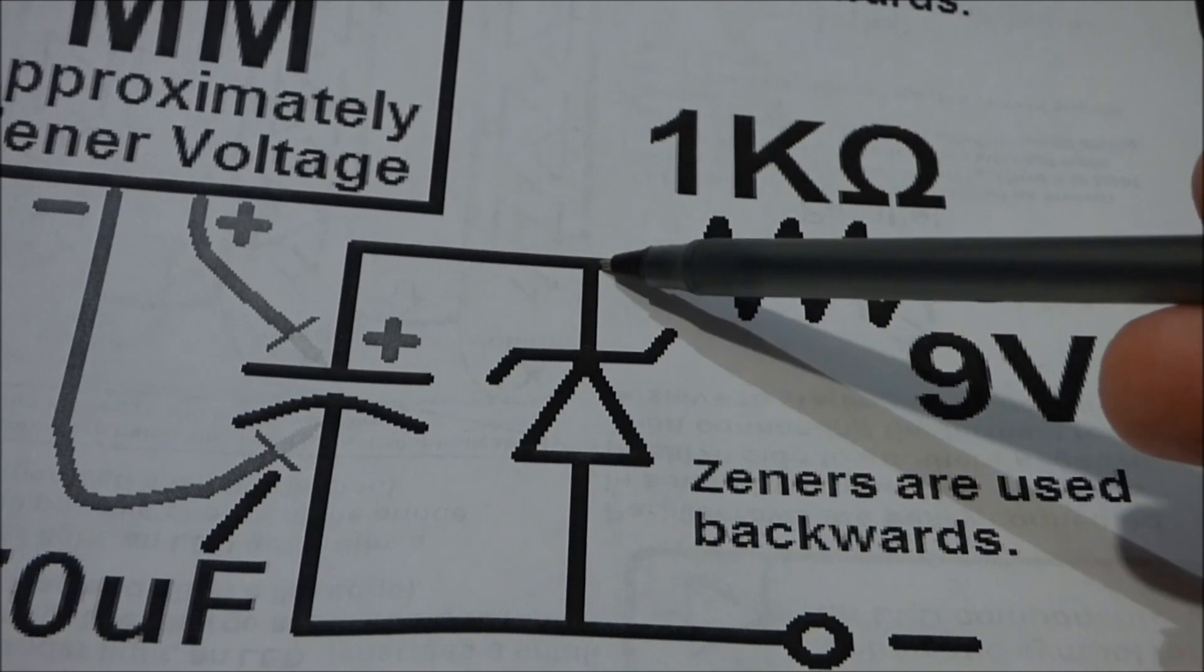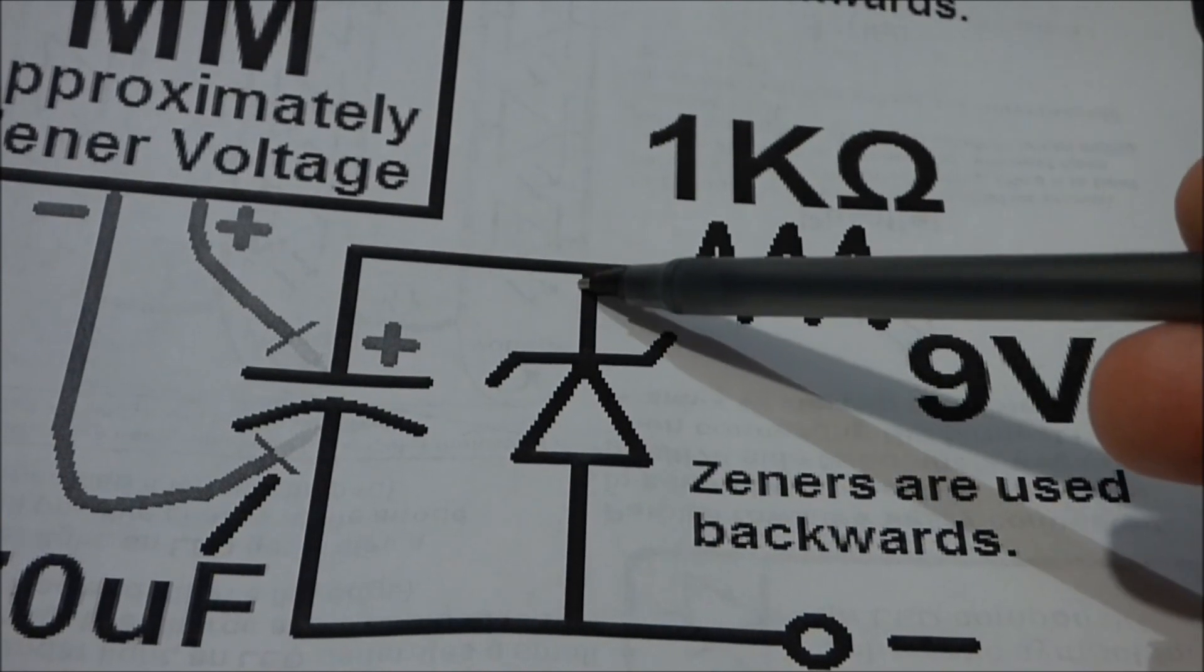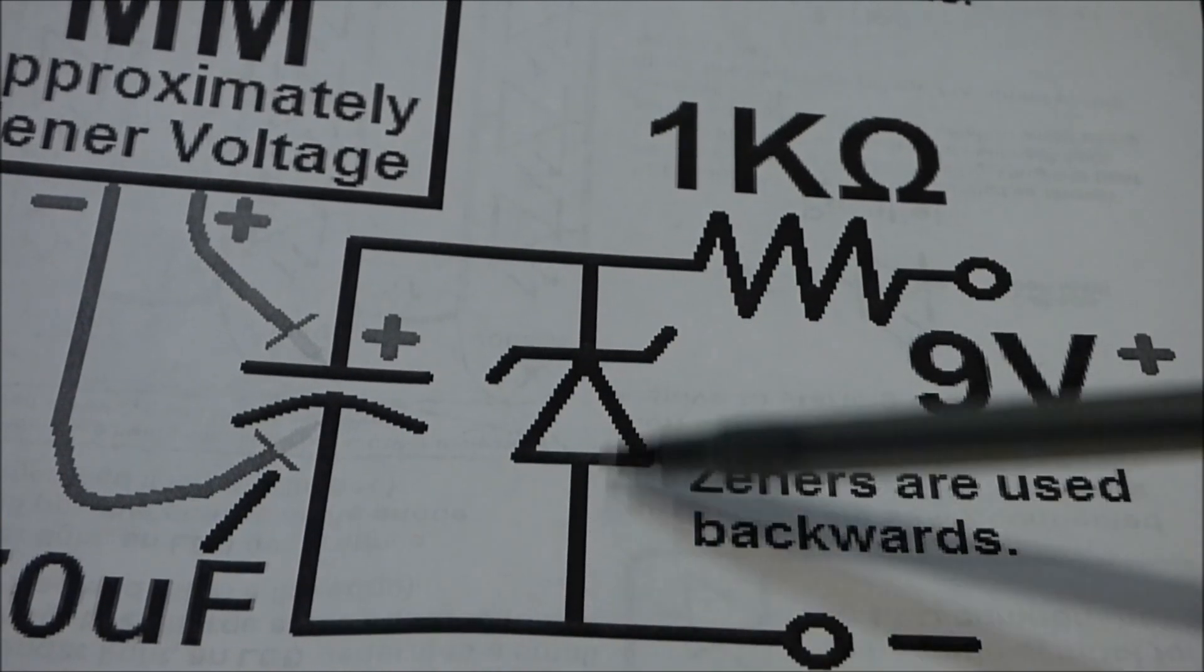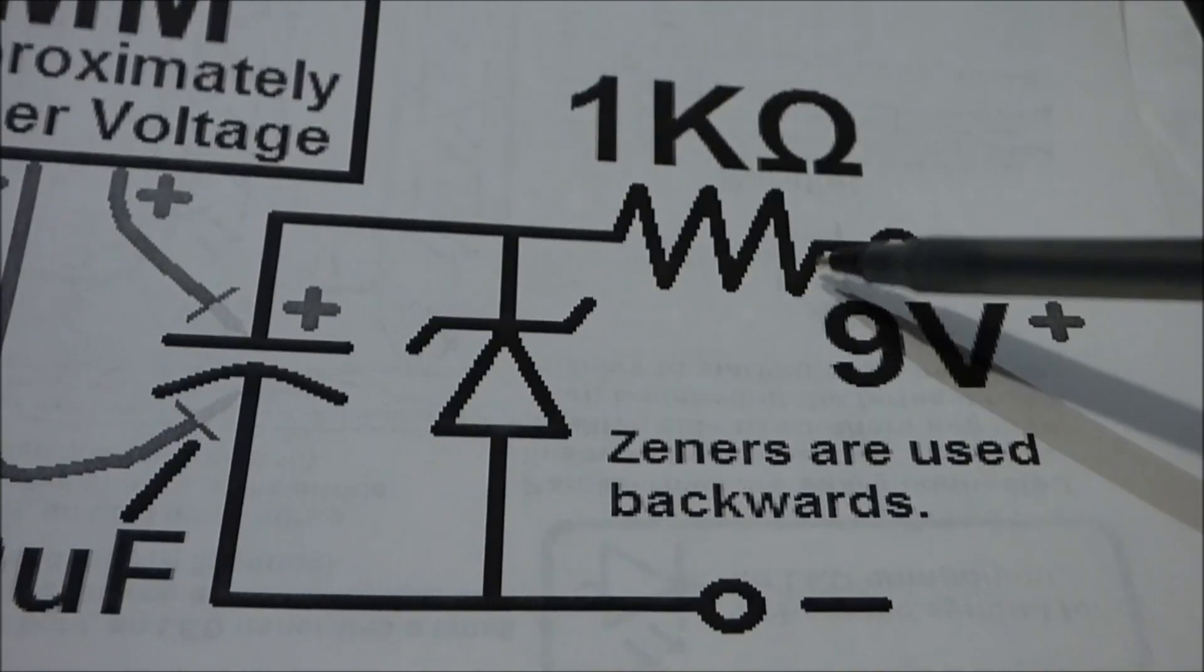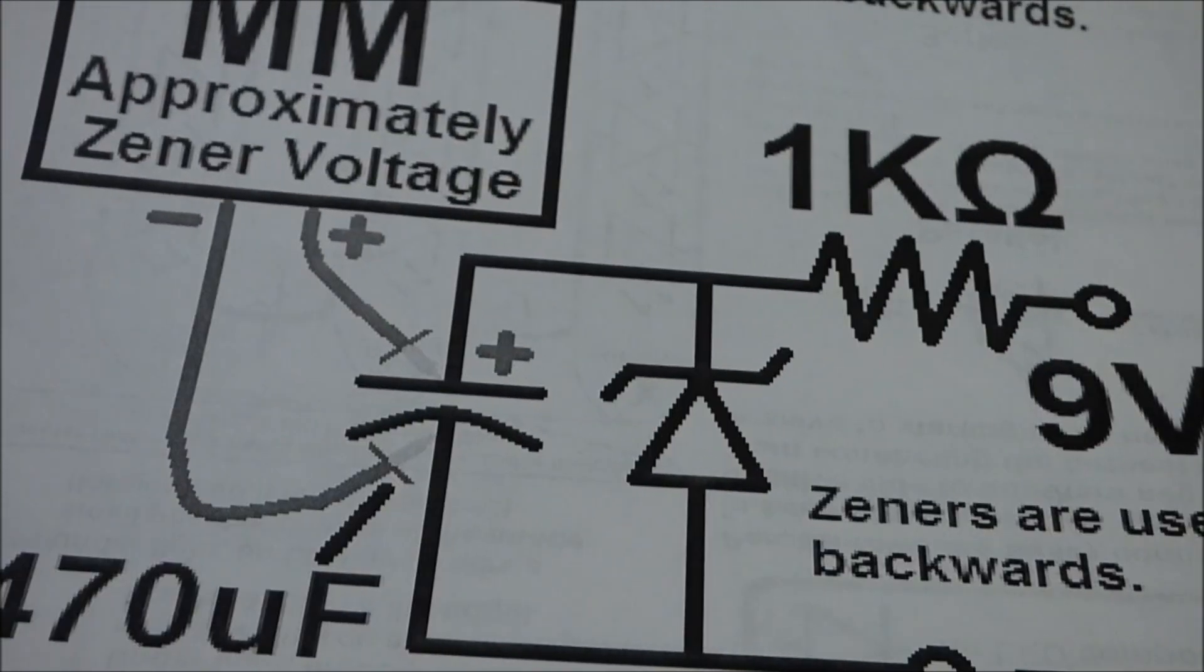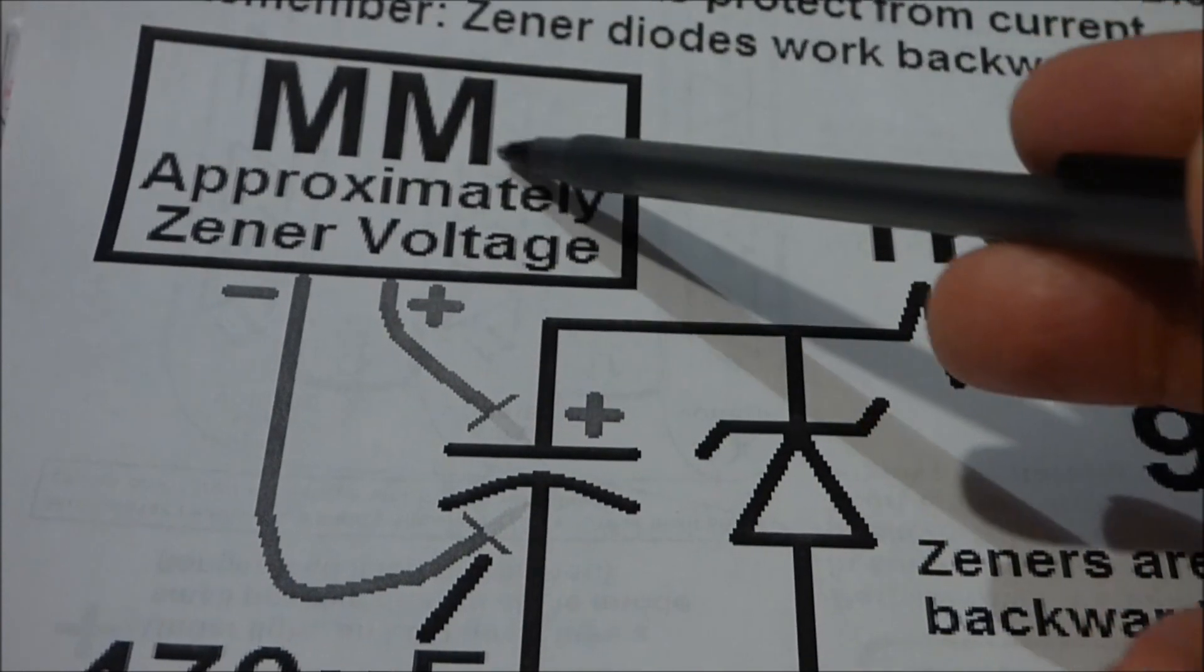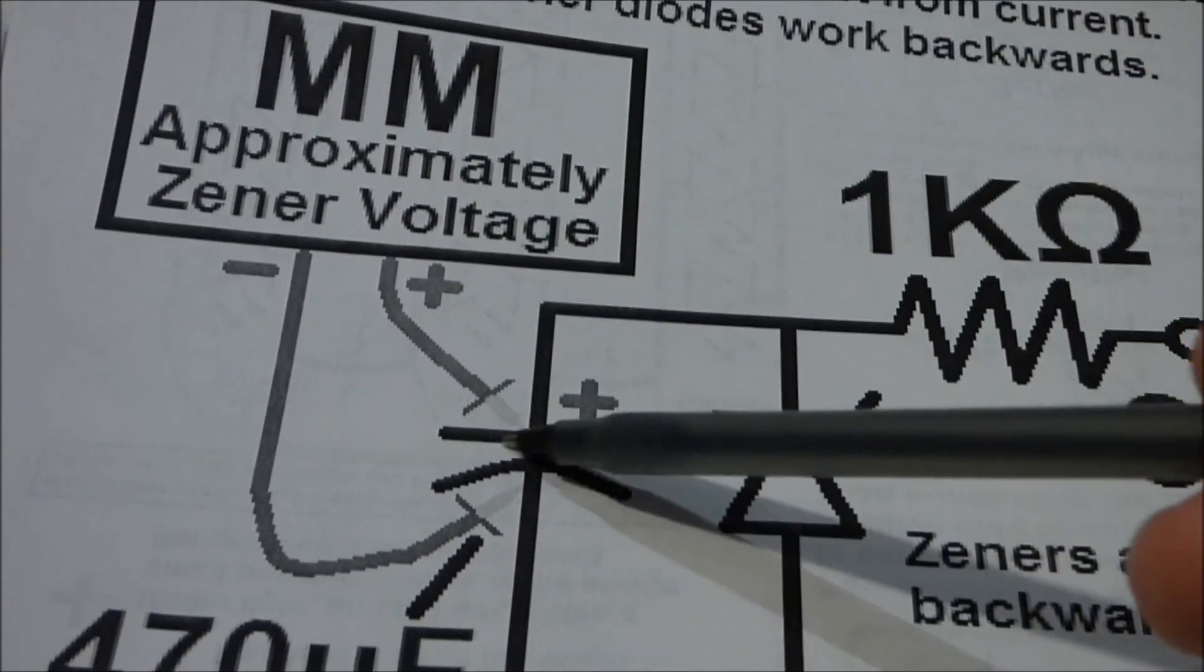We want to test what it's going to conduct at going this way, positive down this way. And there's the protective resistor. So there's the schematic and we'll be measuring the capacitor with the multimeter.